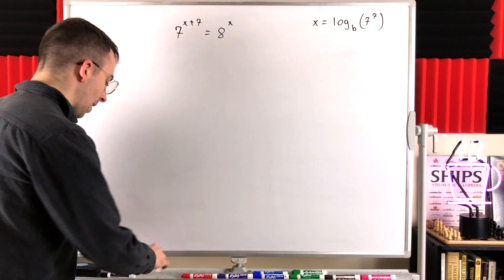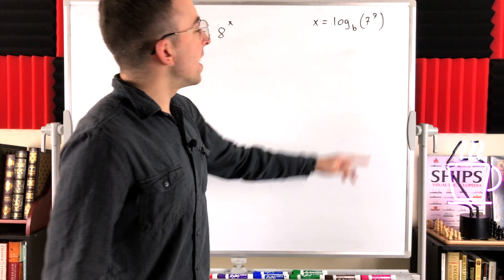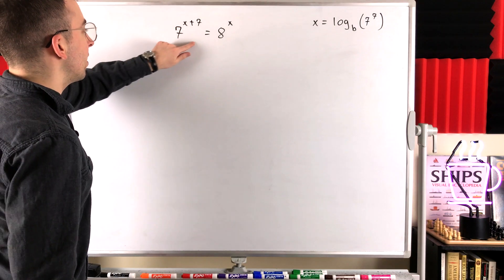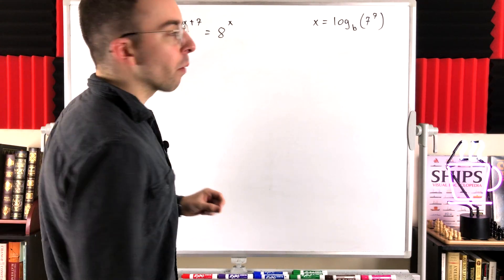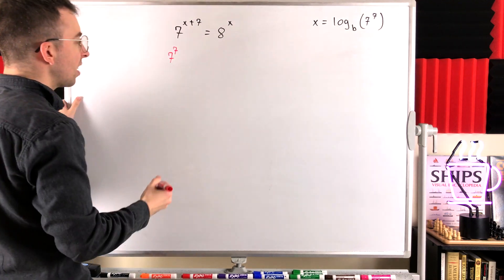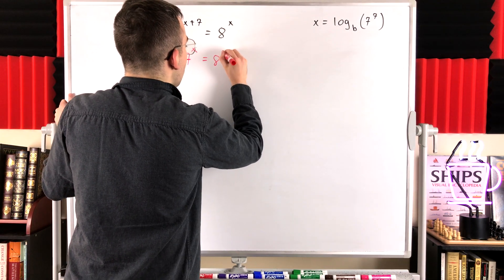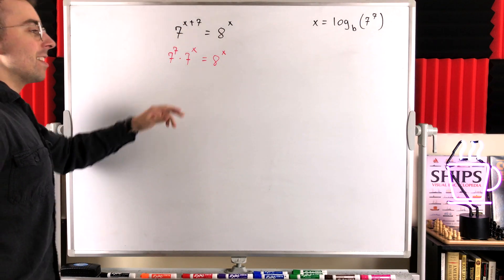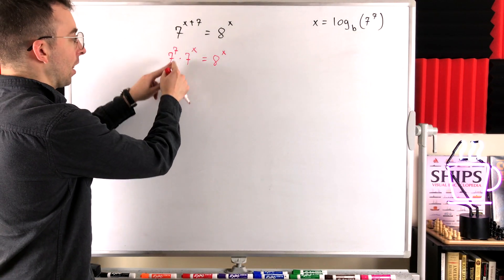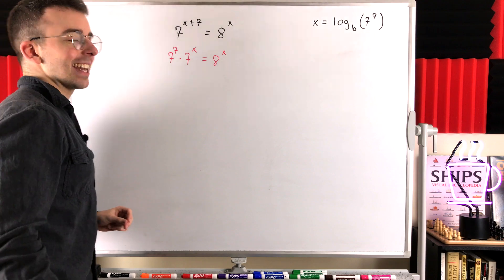We know that the solution to this equation — x equals something — can be written in the form of a log with base b of 7 to the power of 7. We are tasked with finding b: what must the base of that logarithm be? We have to solve this equation for x and get our solution in that form so we can identify what the base of the logarithm must be. We could write 7 to the power of x plus 7 as 7 to the power of 7 times 7 to the power of x, and that equals 8 to the power of x — by the addition rule of exponents.